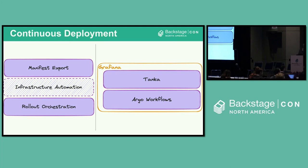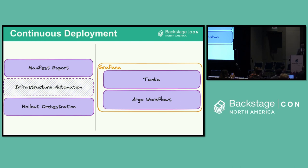That brings us to the continuous deployment layer, where we take those as-code sources and turn them into real Kubernetes and infrastructure resource YAML manifests. We need a brick for exporting those manifests, a brick for handling infrastructure declarations, and a method for handling updates for a new version of the app. Because we use Crossplane, we don't need to explicitly automate infrastructure. We use Tanka to take Jsonnet code and export manifests to our Kubernetes manifest repository, which includes Crossplane CRDs to manage and provision cloud resources. We also have Argo Workflows to handle progressively rolling out new images through our dev and prod clusters, with health checks acting as guardrails.